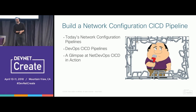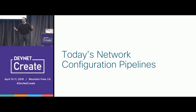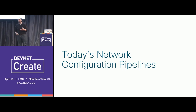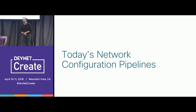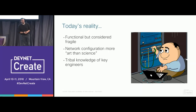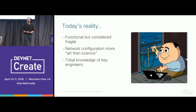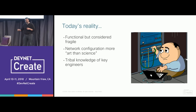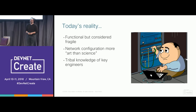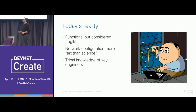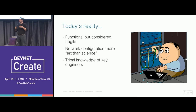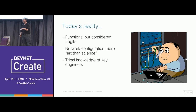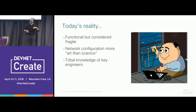Today we have to configure our networks, and whether we have a robust pipeline or one we figure out as we go, we all have a pipeline. If we're honest with ourselves, our configuration pipelines are functional but a bit fragile. Network configuration and network engineering is sometimes more art than science — 'this feels good,' 'I've got a hunch,' 'this worked well for me last time.' The tribal knowledge of key engineers is critical to most change windows. If Bob the network engineer is on PTO, we'll reschedule the change window to make sure Bob is there because he's the only one who knows why that ACL exists.